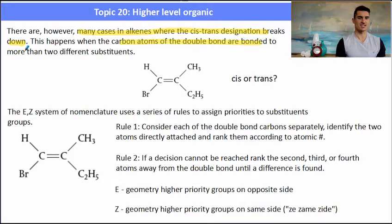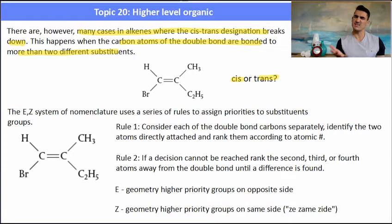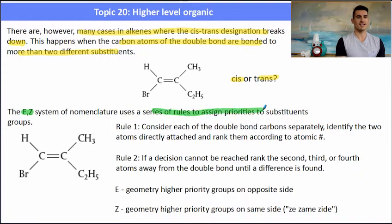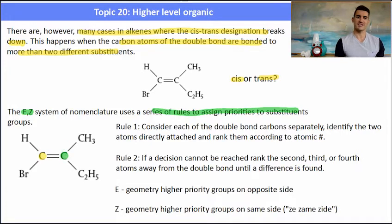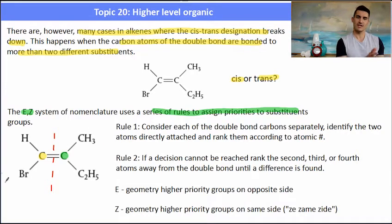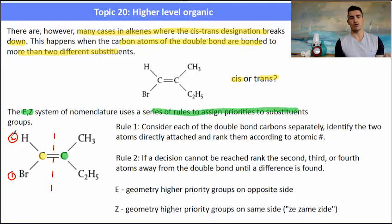Both cycloalkanes and alkenes can have cis/trans orientation. However, in many cases with alkenes the cis/trans designation starts to break down, especially when there are a number of different things bonded to the carbon atoms — it becomes unclear whether it is cis or trans. When we have a situation like this, the EZ system of nomenclature has a series of rules that assigns priorities to the substituents. The first thing you want to do is consider each carbon separately — essentially cut the molecule in half — and then look at the atoms directly bonded to the carbon and rank them in order of atomic number.